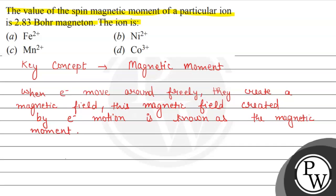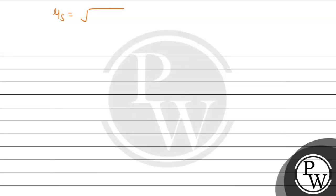According to the question, the spin magnetic moment is given as 2.83 Bohr magneton — Bohr magneton is the unit for magnetic moment. A spin-only magnetic moment occurs when an electron rotates on its own axis and generates a magnetic field. That is termed as the spin magnetic moment. The formula for the same is μs = √(n(n+2)), where n represents the number of unpaired electrons.